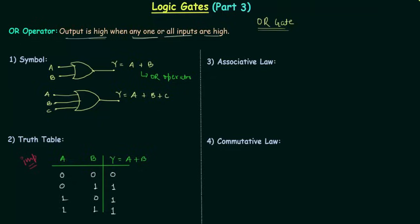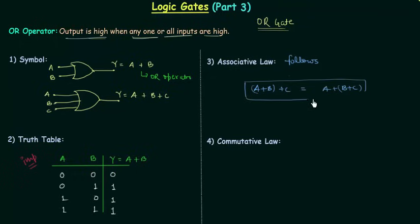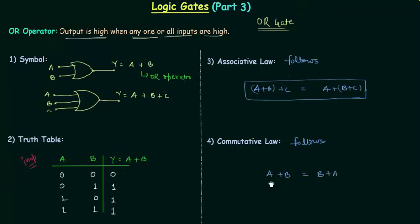Now we will move to the associative law for OR gate. OR gate follows the associative law, which says A OR B OR C is equal to B OR C OR A. You can easily verify this. OR gate also follows the commutative law, which says A OR B is equal to B OR A.